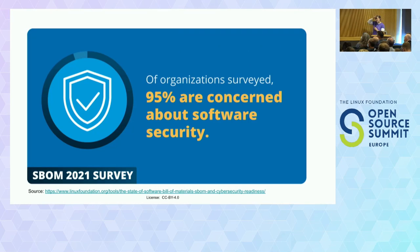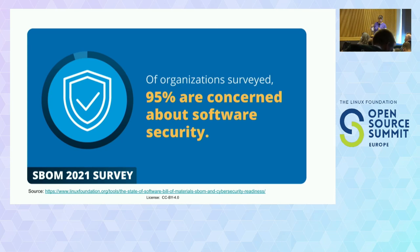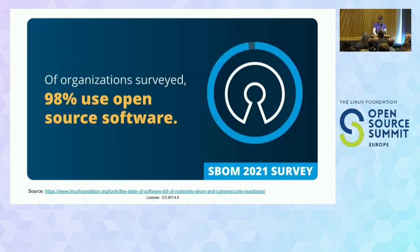Last year the Linux Foundation surveyed organizations — using friends and family and also a panel to avoid bias — and found that 95% of organizations surveyed do care about software security, which is good. And 98% use open source. There's wide recognition that open source is in the ecosystem and we need to be making sure we can address it properly.